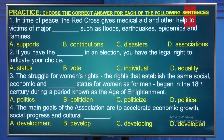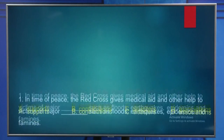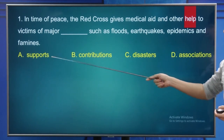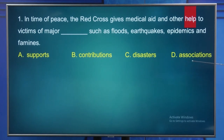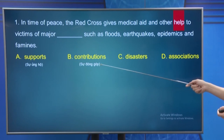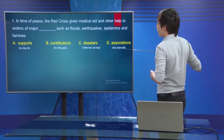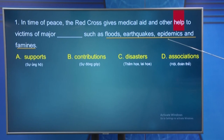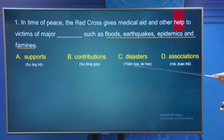Now let's begin with Number 1. The four answer choices are: support, contribution, disaster, association. Looking at the clues: flood, earthquakes, epidemic, and famines - this information relates to disasters or natural calamities. Therefore the answer for Number 1 is C - Disasters.